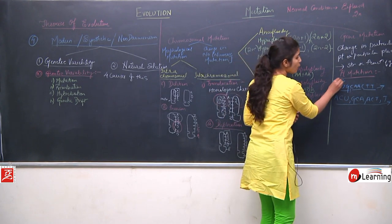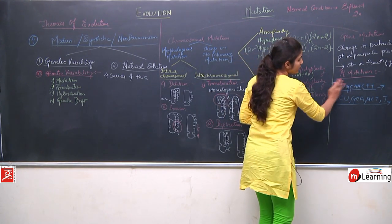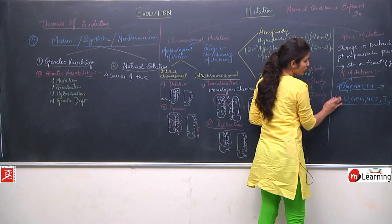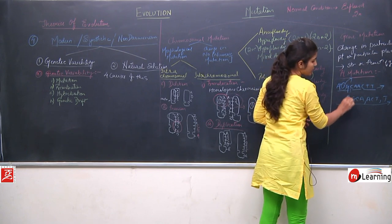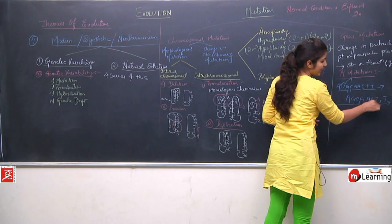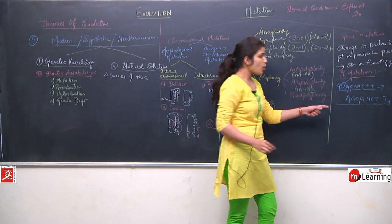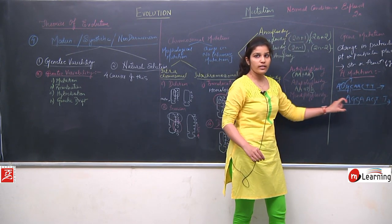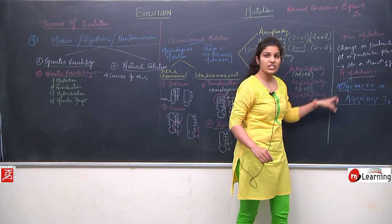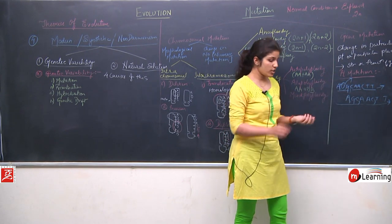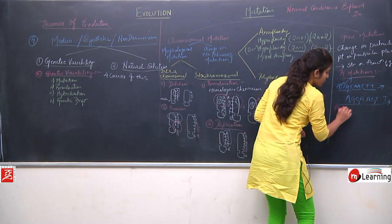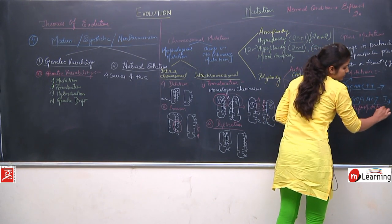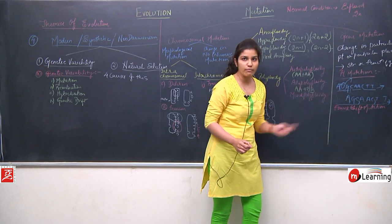We discussed insertion under point mutation. When a particular nucleotide is deleted — if it is deleted — the combination changes to AGC, AAC, TT, which also changes the nucleotide chain structure. This type of mutation caused by insertion or deletion of a nucleotide is called point mutation or frame shift mutation.